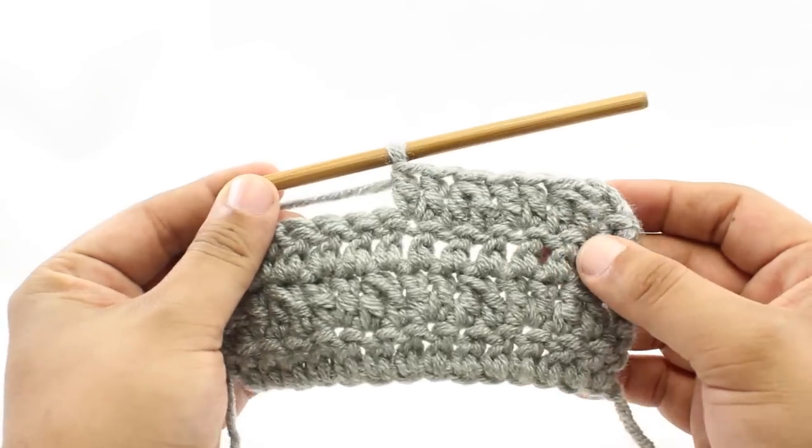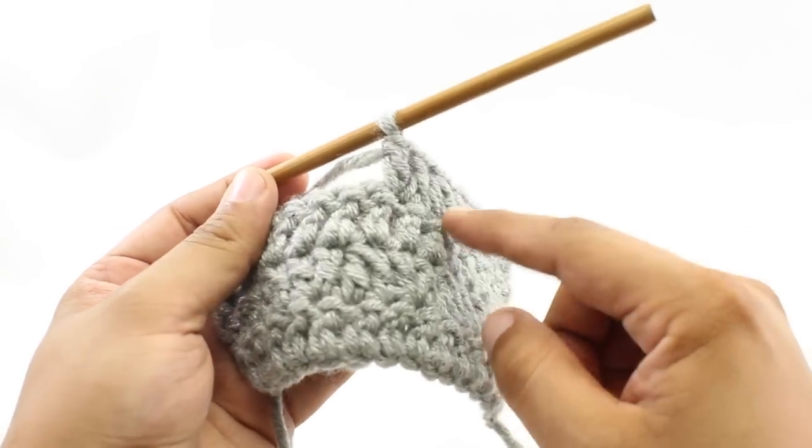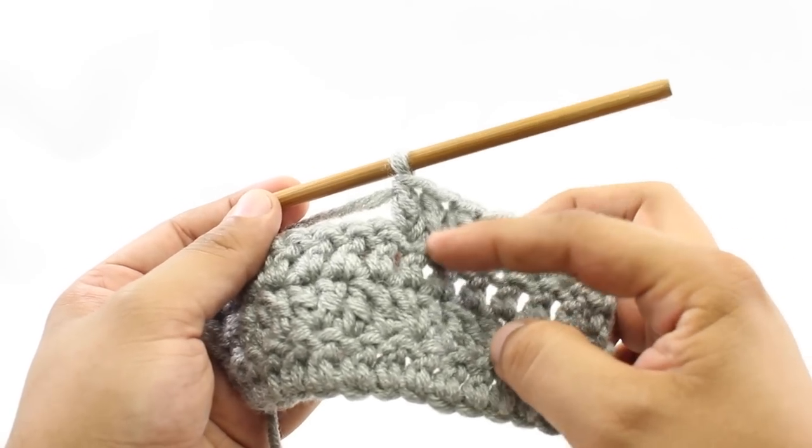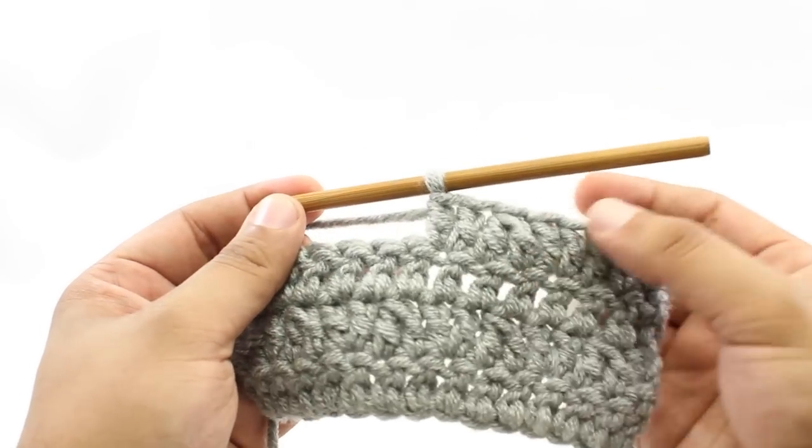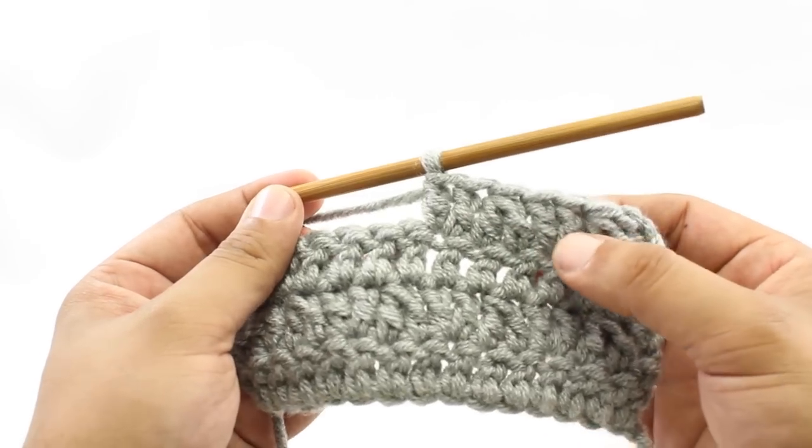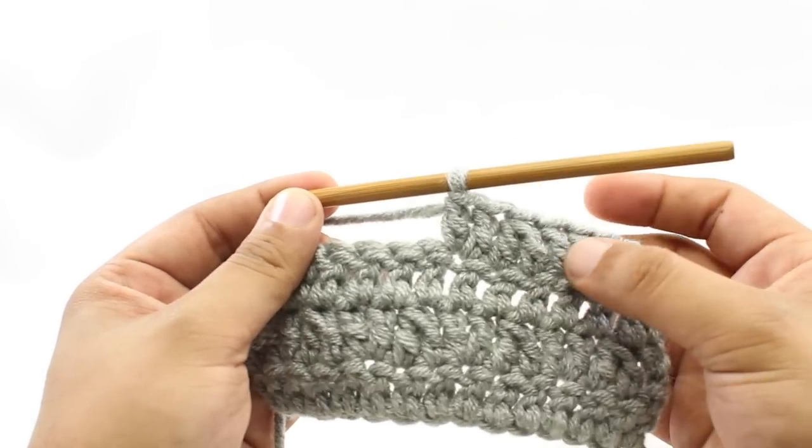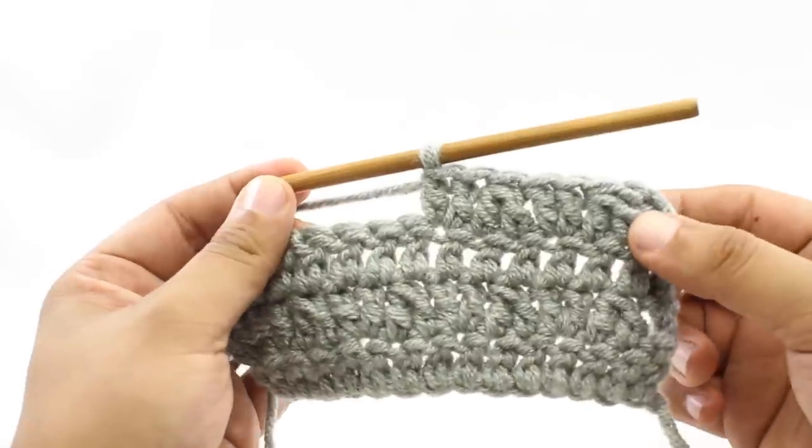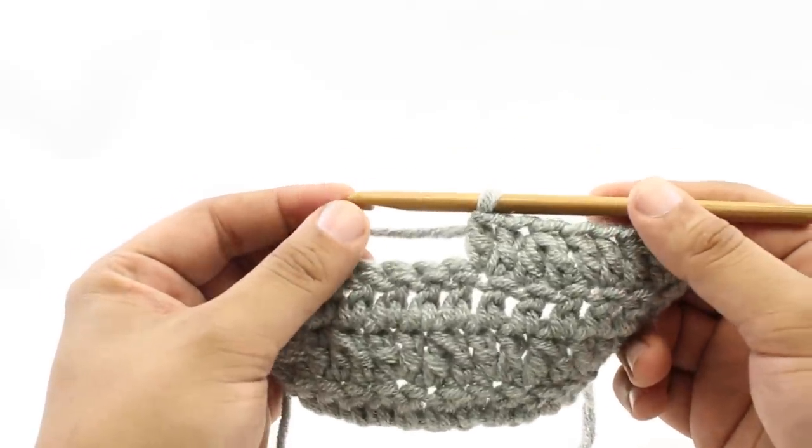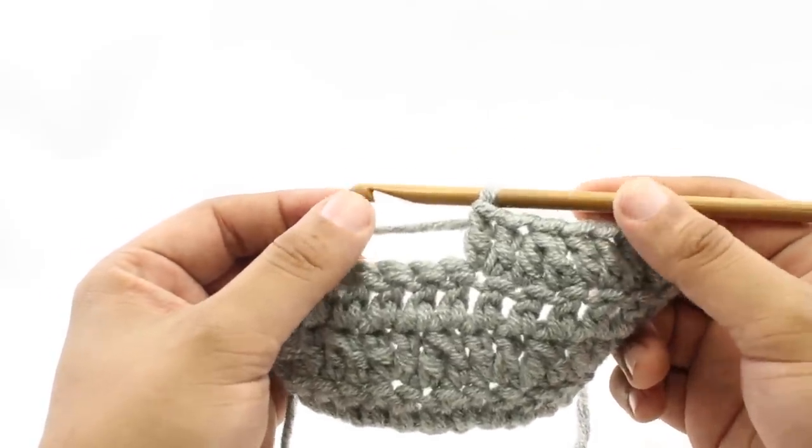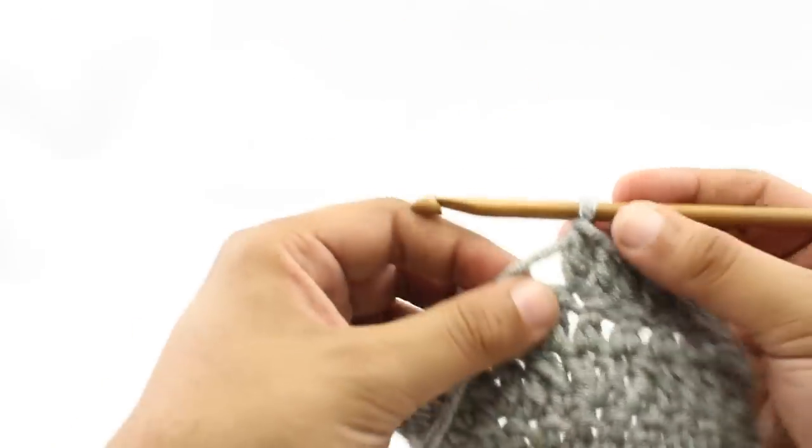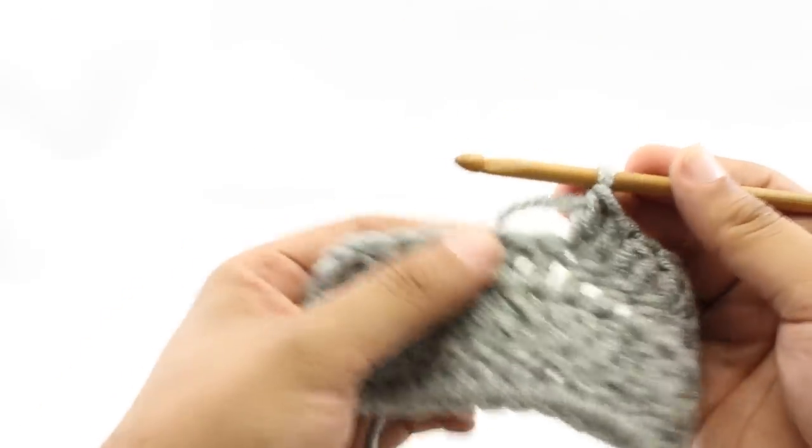The double crochet two together decrease is a method for removing stitches from your work while working a double crochet over two stitches. It's often used in shaping, but it can also be used as a design element in your fabric. You're going to encounter this as an abbreviation, which is DC2TOG. When you encounter this in your pattern, I'll show you how we actually do the decrease.